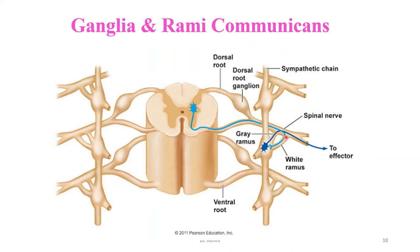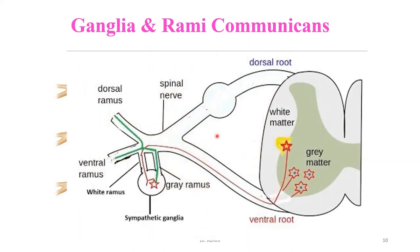In summary: preganglionic fibers travel through the white rami communicantes, relay in the ganglion, and postganglionic fibers return through the gray rami communicantes to the spinal nerve.